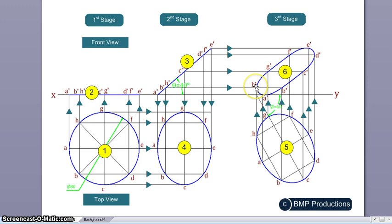That's how we get all the points A dash, B dash, C dash, all the way up to H dash. Once we have these points, we just connect them, and that gives us the front view in the third stage. That's how we draw the projection of planes.